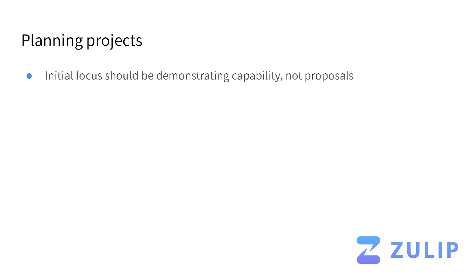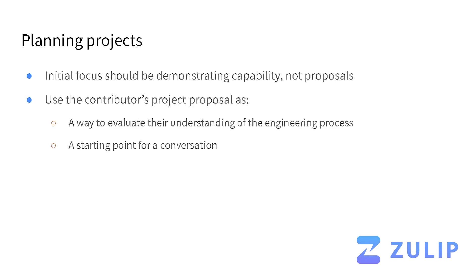One piece of the GSoC application is the project proposal. In our experience, it's really helpful not to start with project proposals. When somebody first comes to the project, they aren't familiar enough to put together a proposal yet, so their focus should be on demonstrating their ability to contribute — putting up PRs and trying to solve issues rather than proposing a specific project. When folks do put together their proposal, the main ways we evaluate it are: first, to get a sense of their understanding of the engineering process — do they sequence the work in a way that makes sense? Do they scope it plausibly, roughly in line with a summer's worth of work?